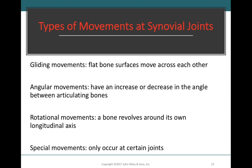Gliding movements refer to movements that allow flat bone surfaces to slide past one another. When two facets on two different bones are sliding past one another, that is a gliding movement. We see a lot of these types of movements occur in the wrists and in the ankles.